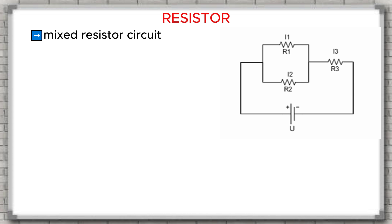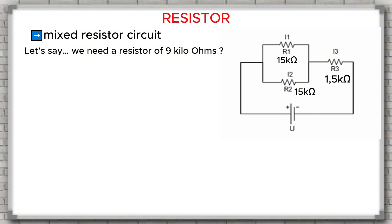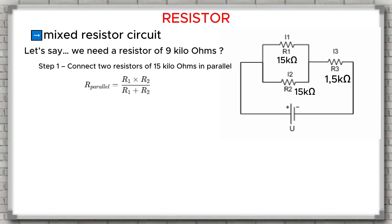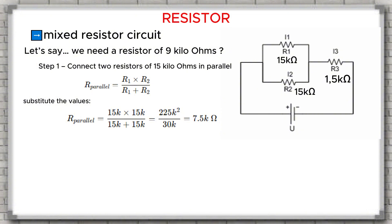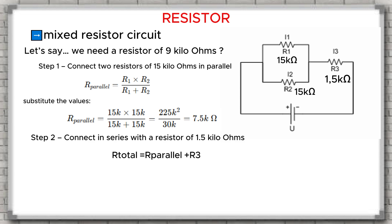We already know there are two basic ways to connect resistors: in series and in parallel. Now, what if we combine both methods? In that case, we create a mixed resistor circuit. This method allows us to achieve a more optimal resistance value, one that fits the needs of the circuit. For example, let's say we need a resistor of 9 kilohms. We can connect two resistors of 15 kilohms in parallel and then connect them in series with a resistor of 1.5 kilohms. Step 1: connect two 15kΩ resistors in parallel — R parallel equals (R1 times R2) divided by (R1 plus R2). Step 2: connect in series with 1.5kΩ — R total equals R parallel plus R3 equals 7.5k plus 1.5k equals 9k ohms.